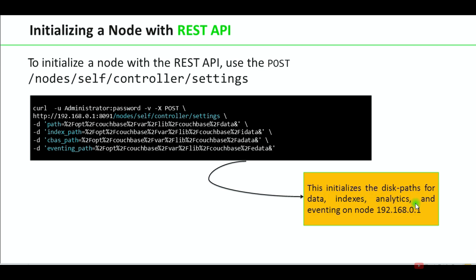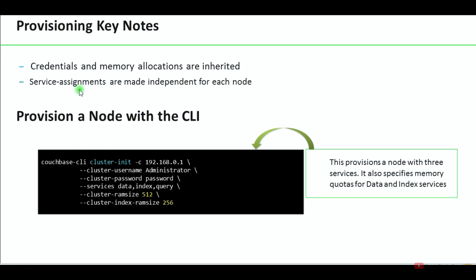During provisioning, key node credentials and memory allocations are inherited — if you allocate a data service node with specific memory settings, the same memory settings will be inherited when adding another data service node. Service assignments are made independently for each node, meaning you can allocate different types of services to each node individually. For example, you can assign data service to one node and assign index and query services combined to a different node.